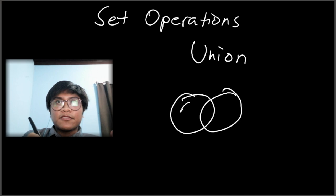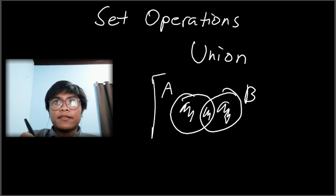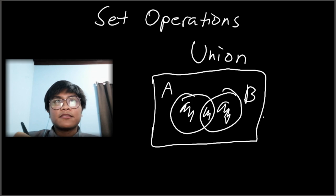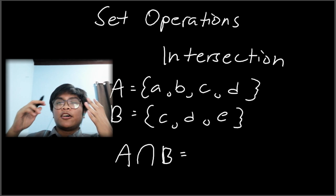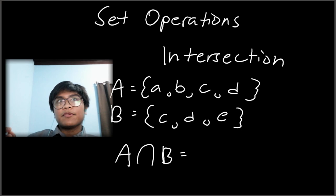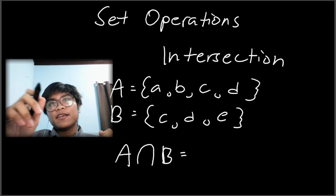For the Venn diagram of union, both circles are filled in because you are joining them together — Set A and Set B enclosed in a box representing the universal set S. Moving on to intersection: intersections are sets whose elements are common to all available sets. For example, Set A intersect Set B.